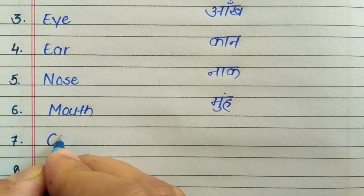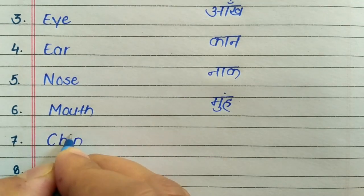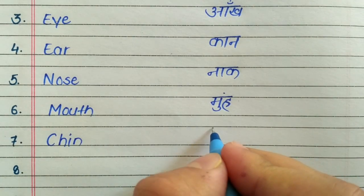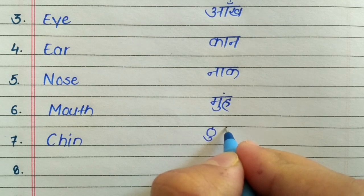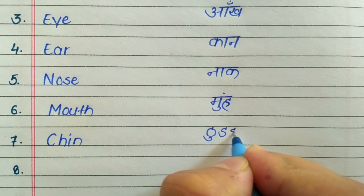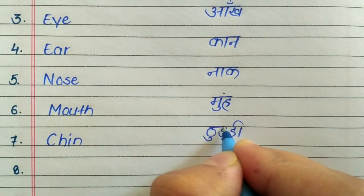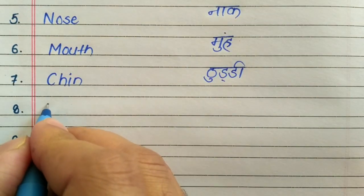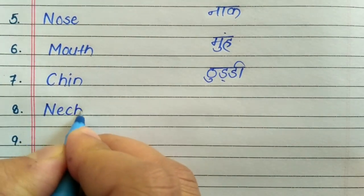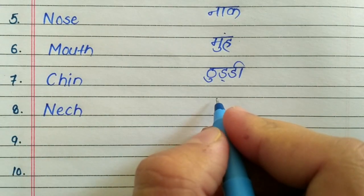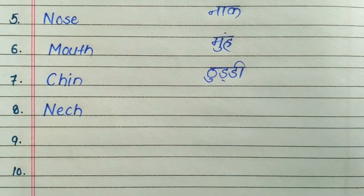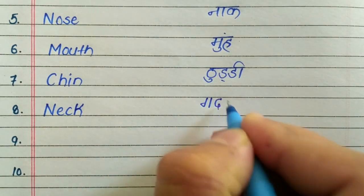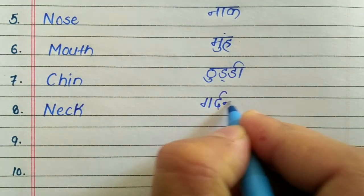Seventh, C-H-I-N, Chin. Chin means Thuddi. Eighth, N-E-C-K, Neck. Neck means Girdan.